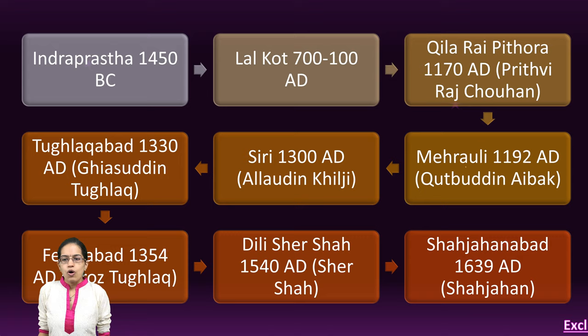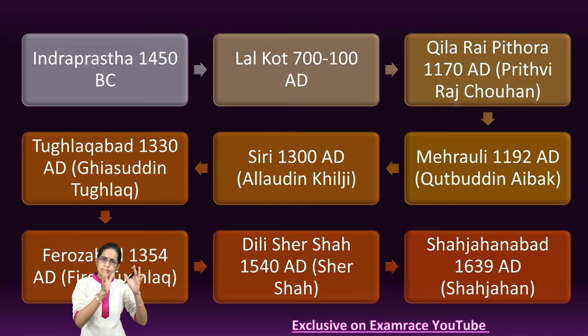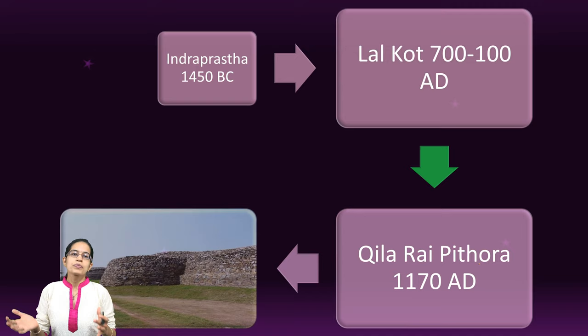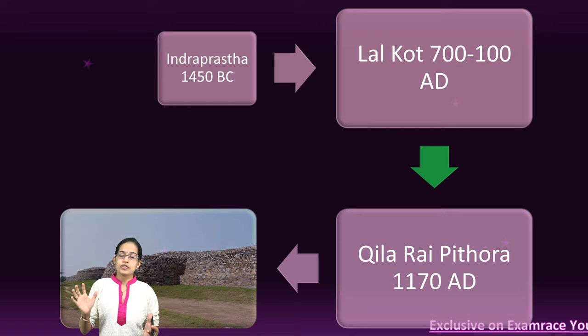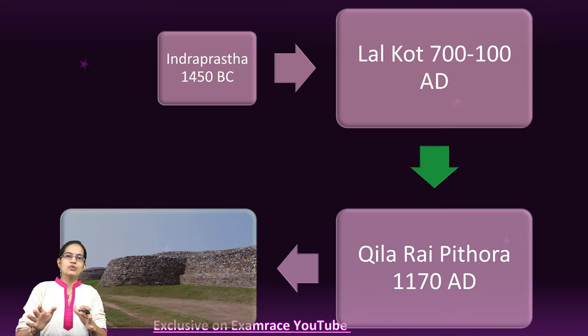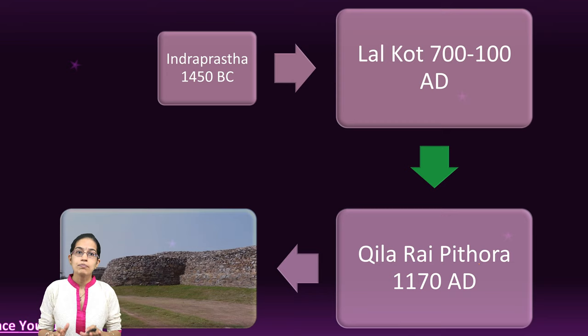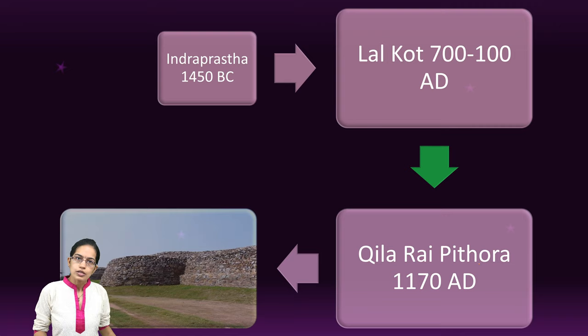Looking at this flow chart, we have the hierarchy of how the cities were built. The first city built was Lalkot. Lalkot was part of the regular defence module during the Tomar period. Later, it was known as Kilarai Pithora, which was built by Prithviraj Chauhan.